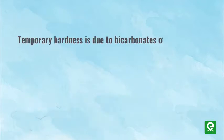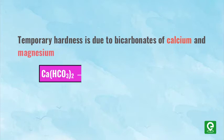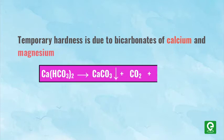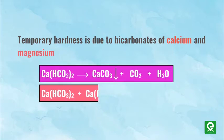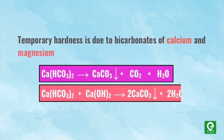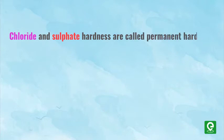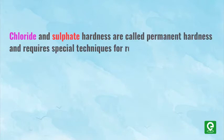Water hardness due to bicarbonates of calcium and magnesium is known as temporary hardness, and can be removed by boiling the water or by lime treatment. Hardness of water due to chlorides and sulfates is called permanent hardness, and requires special techniques for removal.